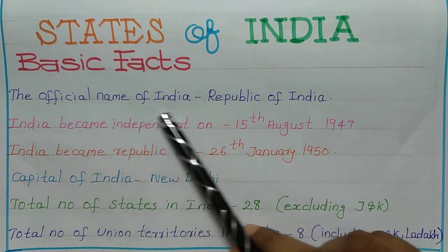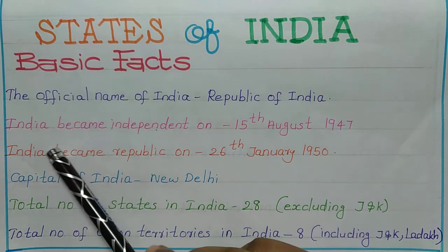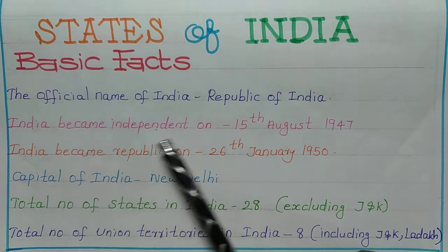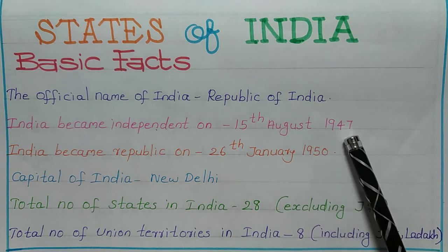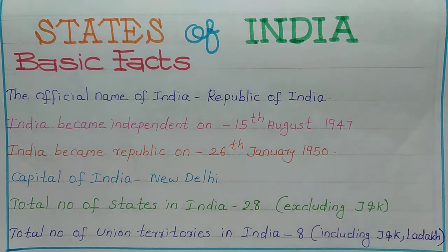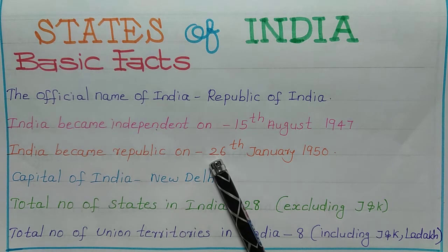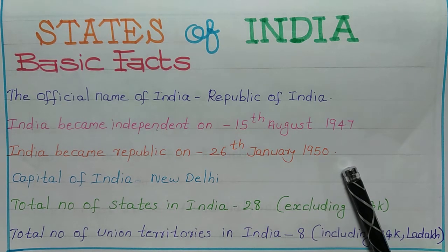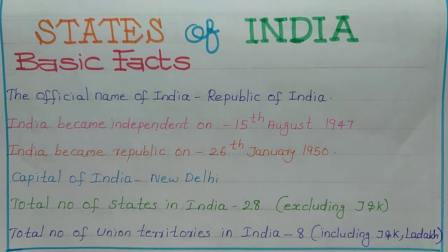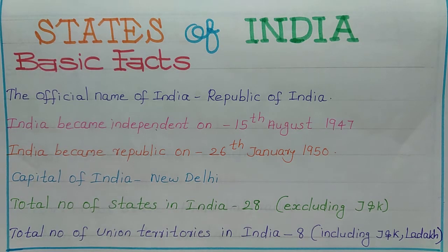The official name of India is Republic of India. India became independent on 15th August 1947, and became a Republic on 26th January 1950. The capital of India is New Delhi.